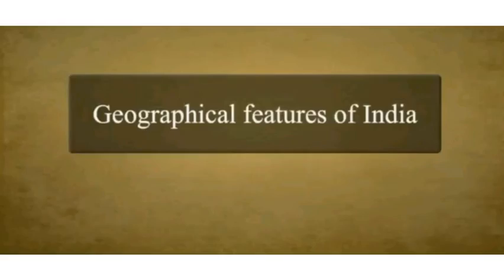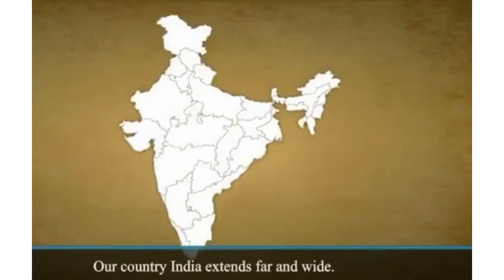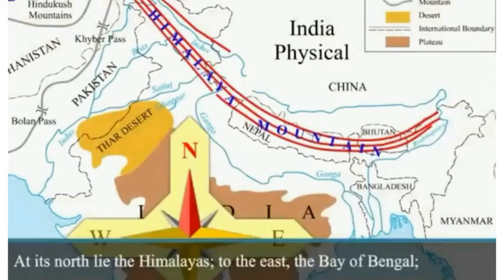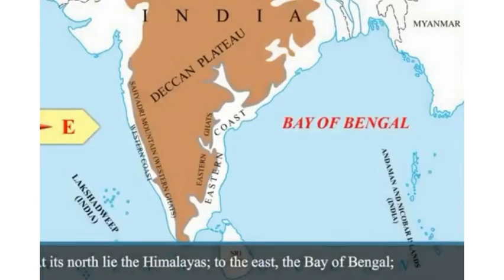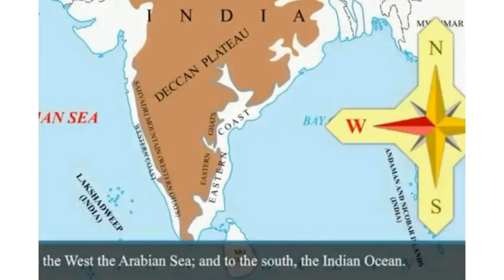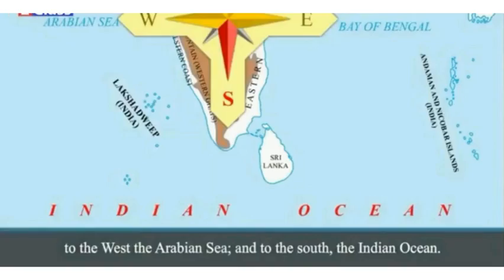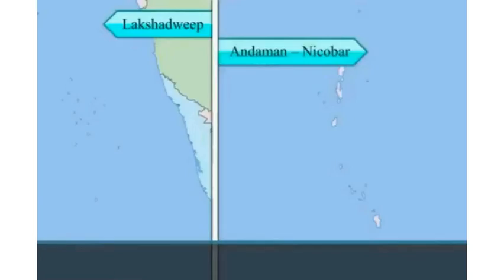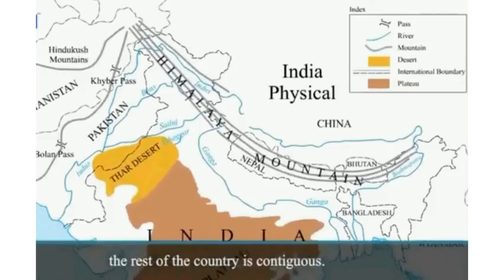Geographical features of India: our country India extends far and wide. It is bounded by the Himalayas to the north, the Bay of Bengal to the east, the Arabian Sea to the west, and the Indian Ocean to the south. Except for the islands of Andaman and Nicobar, and Lakshadweep, the rest of the country is contiguous. We have to take into account this region, henceforth referred to as ancient India.